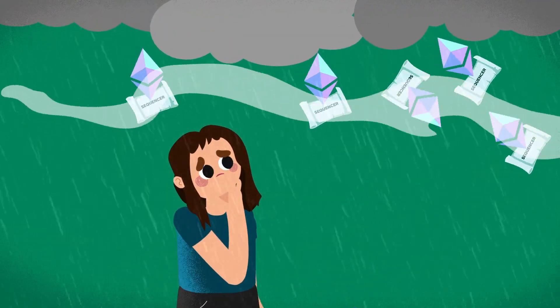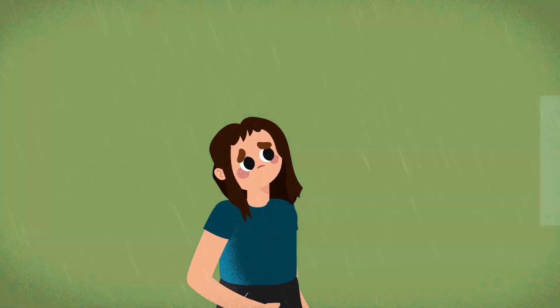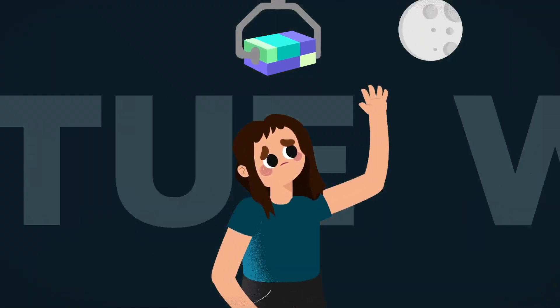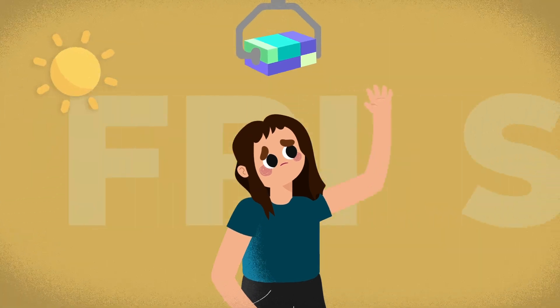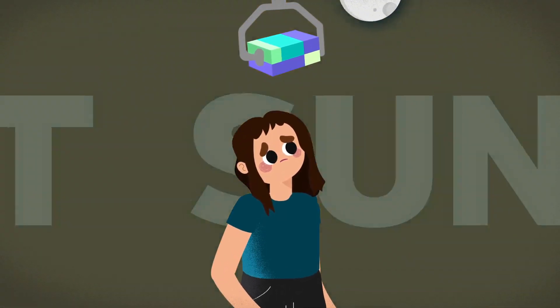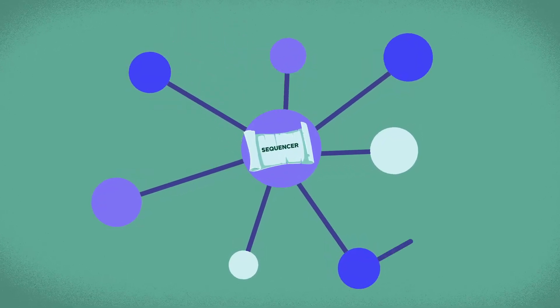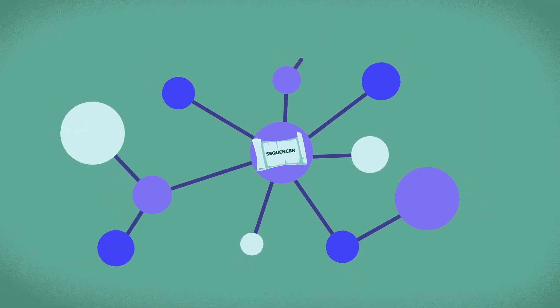However, optimistic rollups also experience some setbacks. For instance, delays in transaction finality, as users have to wait through the challenge period, usually up to one week, before they can withdraw their funds. Also, the use of centralized sequencers may lead to censorship and security problems, though most L2s today are looking to gradually decentralize their sequencers.